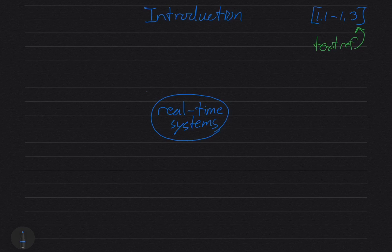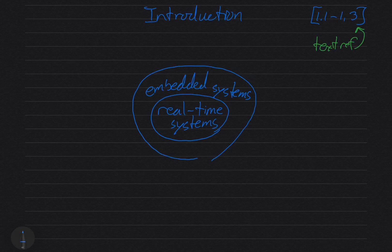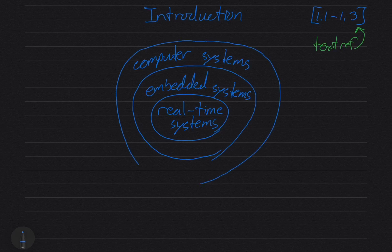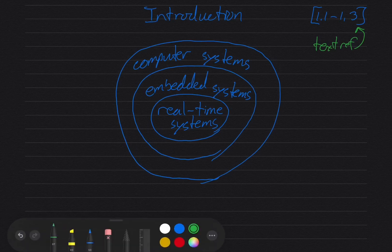Real-time systems are a subset of embedded systems. While I'm thinking about it, the text references are not required reading - they're just there for more information if you need a better explanation on a topic. Let's just start with the outer layer: just general computer systems.